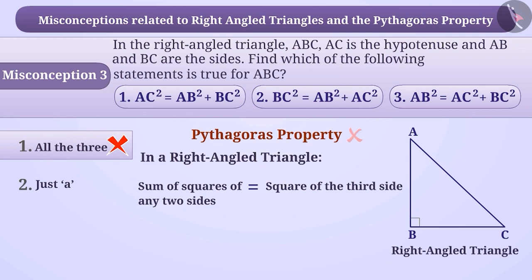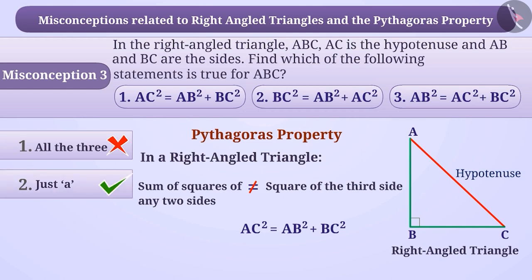The correct understanding is that the sum of squares of any two sides in a right-angled triangle is not equal to the square of the third side. Only the sum of squares of the sides smaller than the hypotenuse is equal to the square of the hypotenuse. Therefore, the correct answer here is option 2.